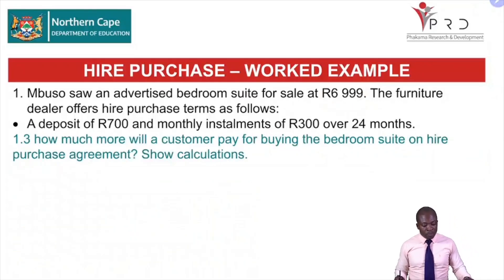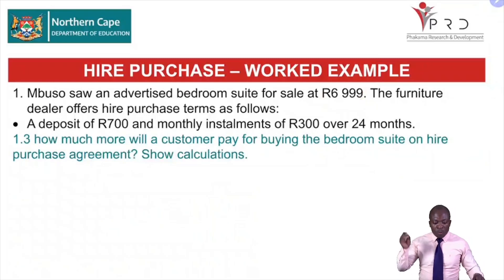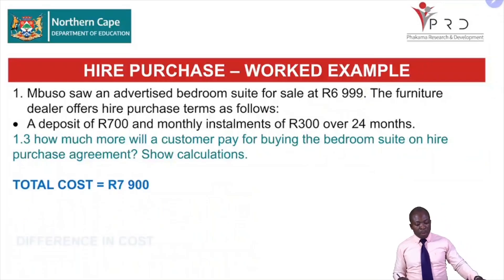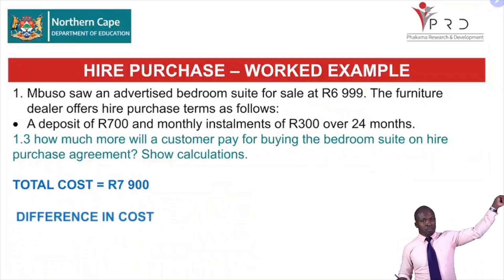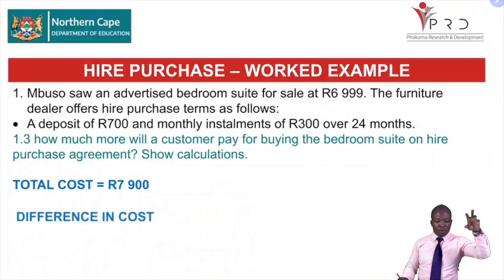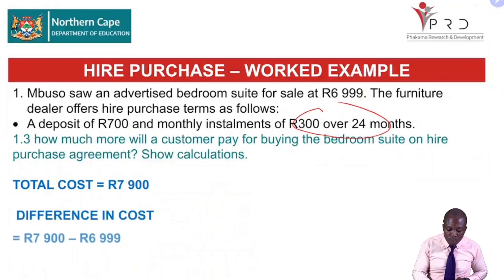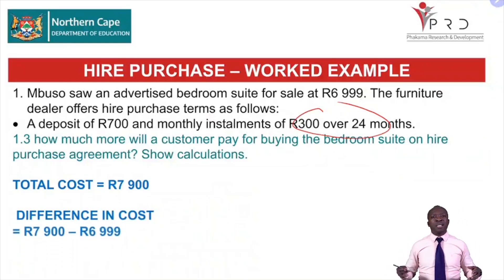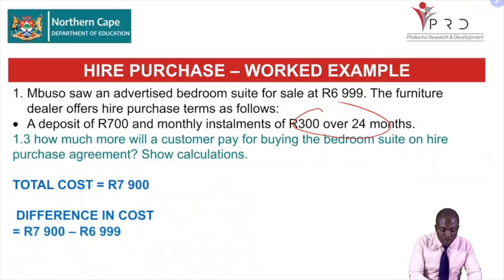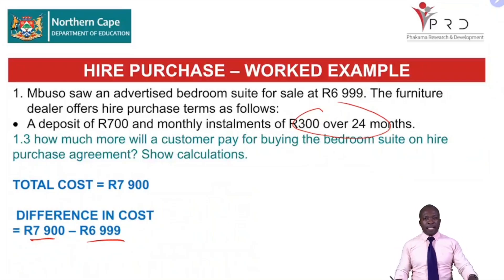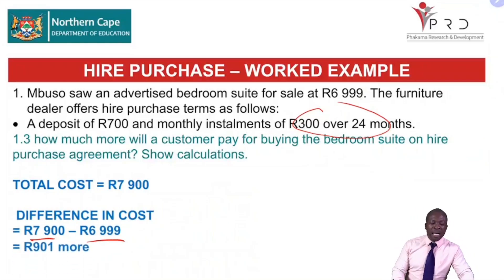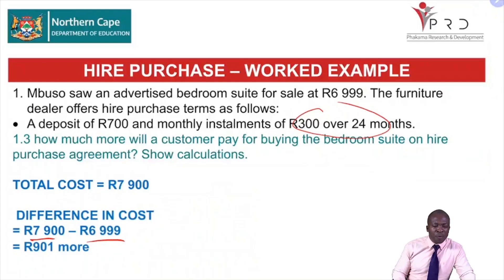For question 1.3 — how much more will the customer pay for buying the bedroom suite on higher purchase? We take the 7,900 and subtract the original price of 6,999. Whenever we see 'difference,' remember we subtract. So all in all, the customer would have paid an extra 901 rand more. I hope you can do this when you find it in the examination.